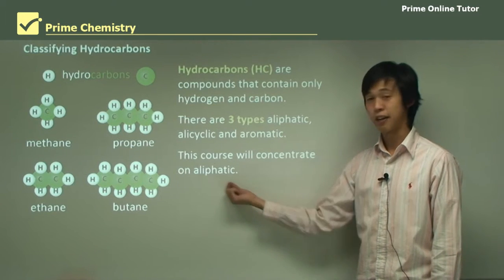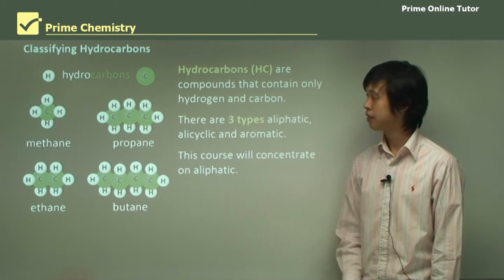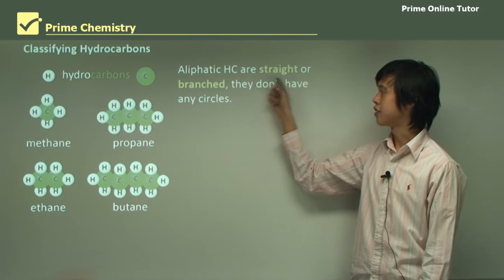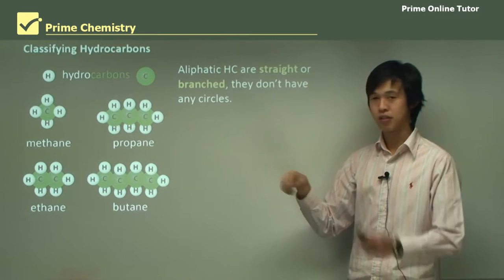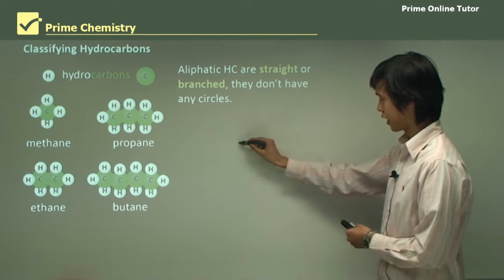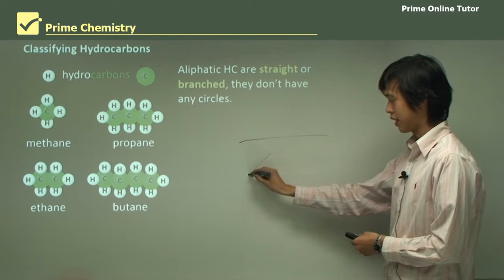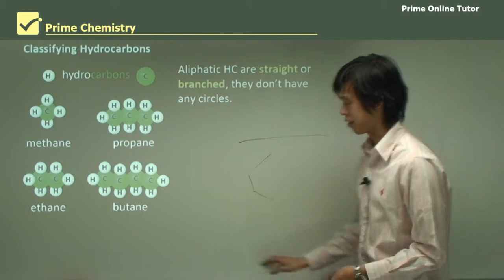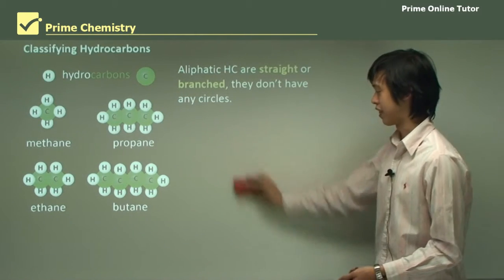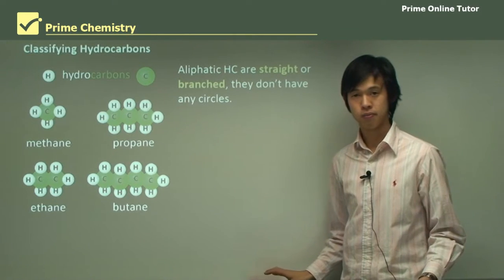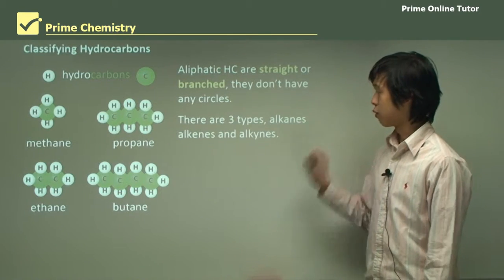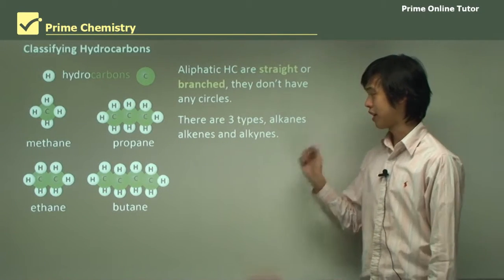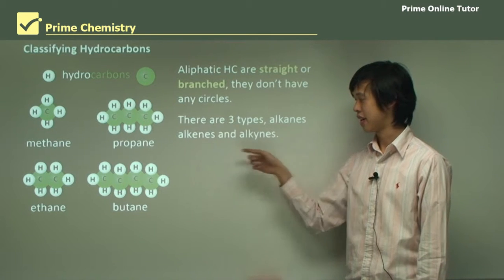In this course, we'll be concentrating on the aliphatic type. Aliphatic hydrocarbons are straight or branched and they don't have any rings or circles — so we're likely to see straight or branched structures, but not cyclic ones. That would be more like the aromatic group of hydrocarbons. Within the aliphatic group, there are three subtypes: alkanes, alkenes, and alkynes.